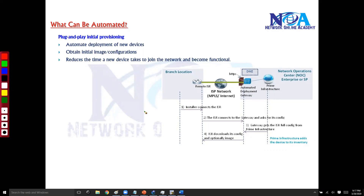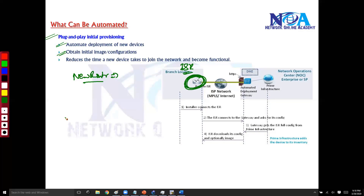The first thing is plug-and-play provisioning — the initial provisioning of devices. Plug-and-play provisioning is the automatic deployment of new devices on the network where they can obtain initial configurations whenever you add a new device. For example, let's say you have a remote branch office where you're going to set up a new ISR router.